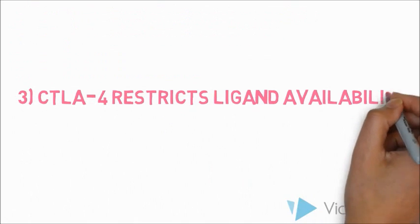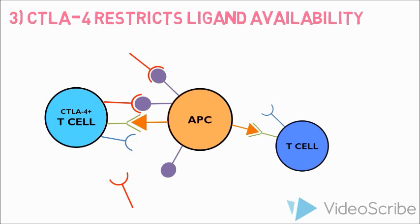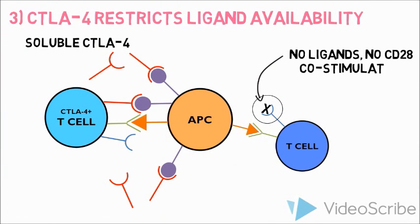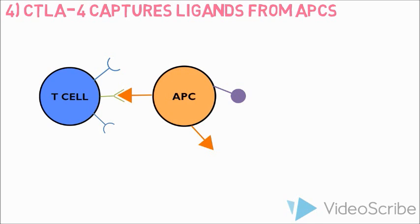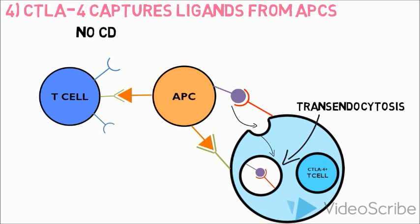CTLA-4 restricts ligand availability: soluble CTLA-4 reduces the availability of CD80/86 to CD28, meaning no CD28 co-stimulation. CTLA-4 also captures ligands from APCs: CTLA-4 binds to the CD80/86 ligand and breaks it off the APC. The complex then gets consumed by the T-cell, leaving no CD80/86 for CD28 to bind to.